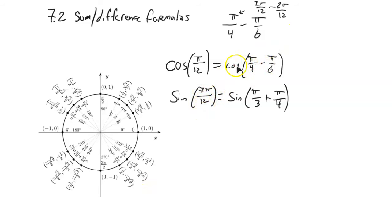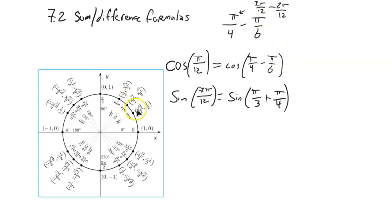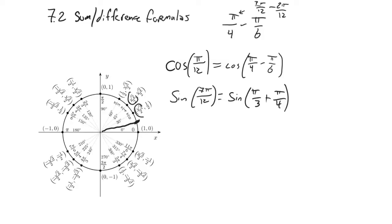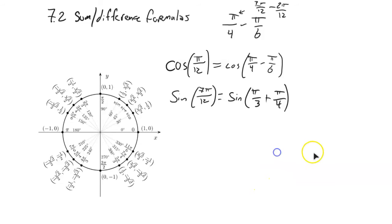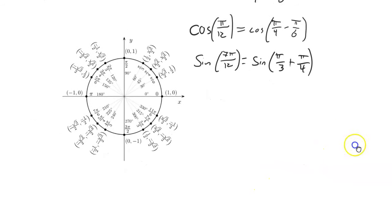Now it's not as easy as just going cosine of pi over 4 minus cosine of pi over 6 — that's not going to get me my answer. Pi over 12 is about here on the unit circle, so it's not just this minus that. But there is a way to get there. We're going to use formulas to break up cosine when we have a sum or difference of angles, and the same with sine. What I'm going to do right now is a little bit of a proof — I'll show you where it comes from and then show you how to use it.